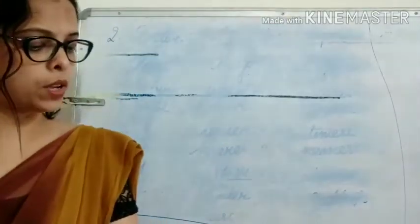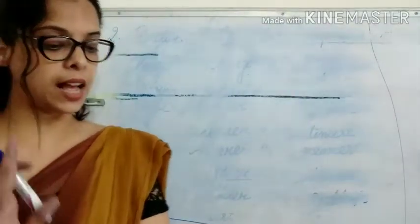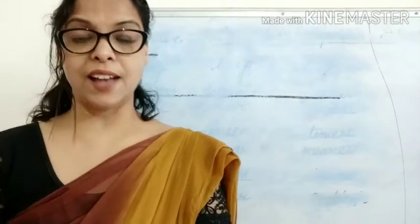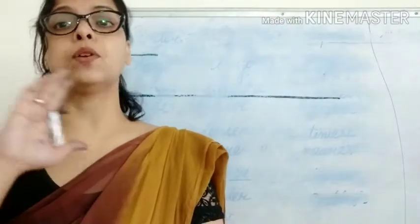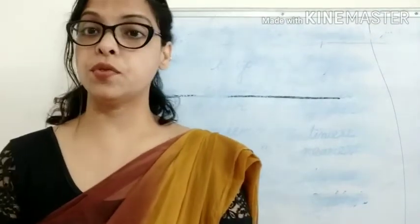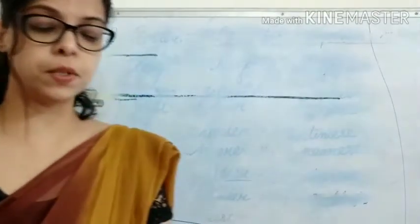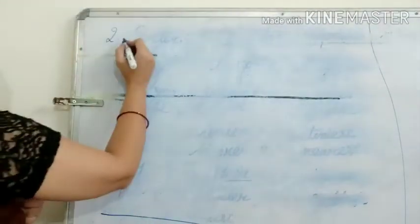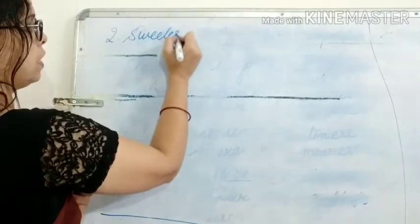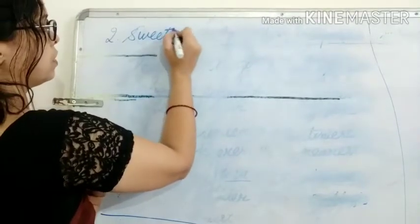Second: 'The mango is one of the ___ fruits.' Again 'the' is there, and it is talking about all fruits, so we use the superlative form. Sweet becomes 'sweetest': S-W-E-E-T-E-S-T.